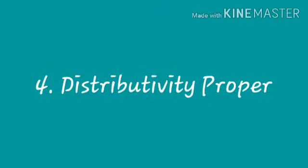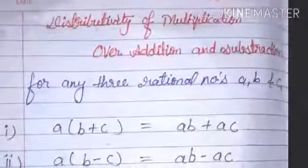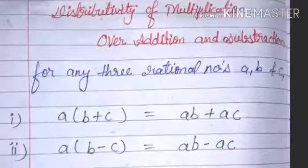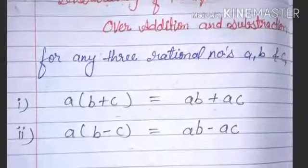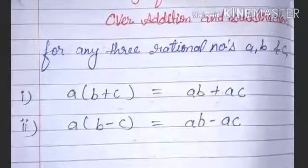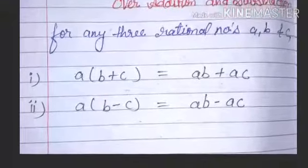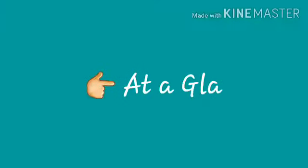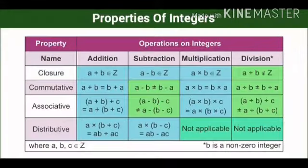Now we come to the distributivity of multiplication over addition and subtraction. For any three rational numbers a, b, c: a multiplied by (b plus c) can be written as ab plus ac. And a multiplied by (b minus c) can be written as ab minus ac. Students, see all the properties at a glance in this picture — the properties highlighted with dark green are not applicable for their respective operations.